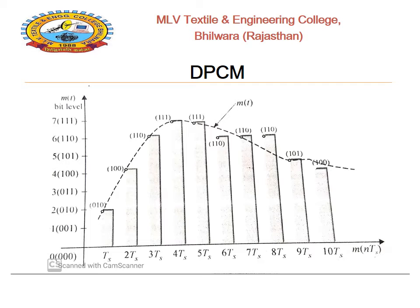By observing the figure, samples taken at 4Ts and 5Ts are encoded to the same value of 1111. This information can be carried by only one sample, but these two samples are carrying the same information — that is redundant. Similarly, for samples at 9Ts and 10Ts, the difference is only in the last bit; the first two bits are redundant since they do not change.